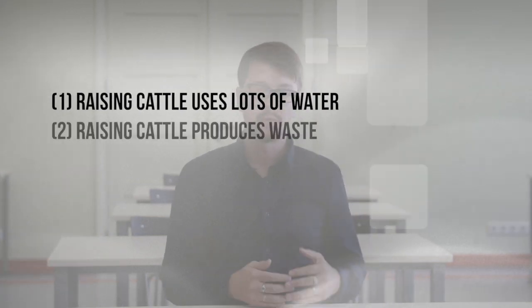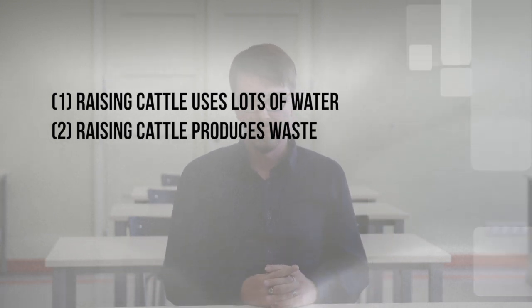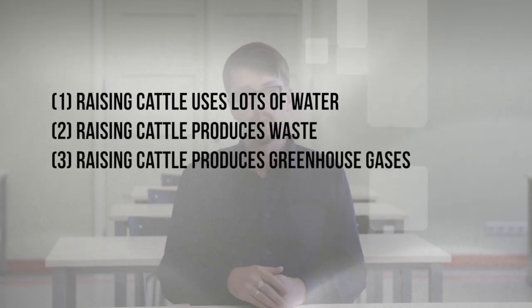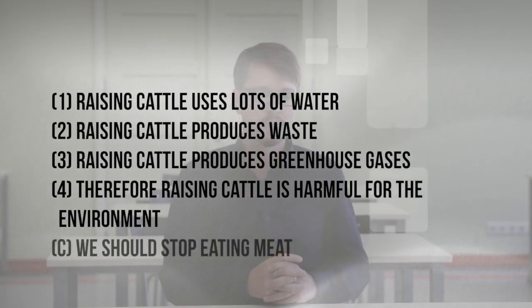Now we come to the more meaty arguments. First, the argument about the environment — take a moment and think about how you might reconstruct it. My version goes: step one, raising cattle uses a lot of water; step two, raising cattle produces lots of waste harmful to the environment; step three, raising cattle produces lots of greenhouse gases also harmful to the environment; therefore raising cattle is harmful for the environment; therefore we should stop eating meat.